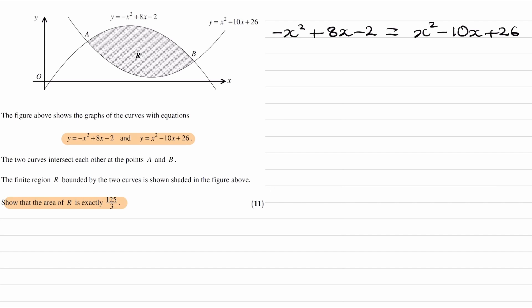And when we solve this, this will tell us the x coordinates for points A and B. Bring everything to the right, we get 2x squared, take away the 8x, we get minus 18x, and then add the 2, we get plus 28.